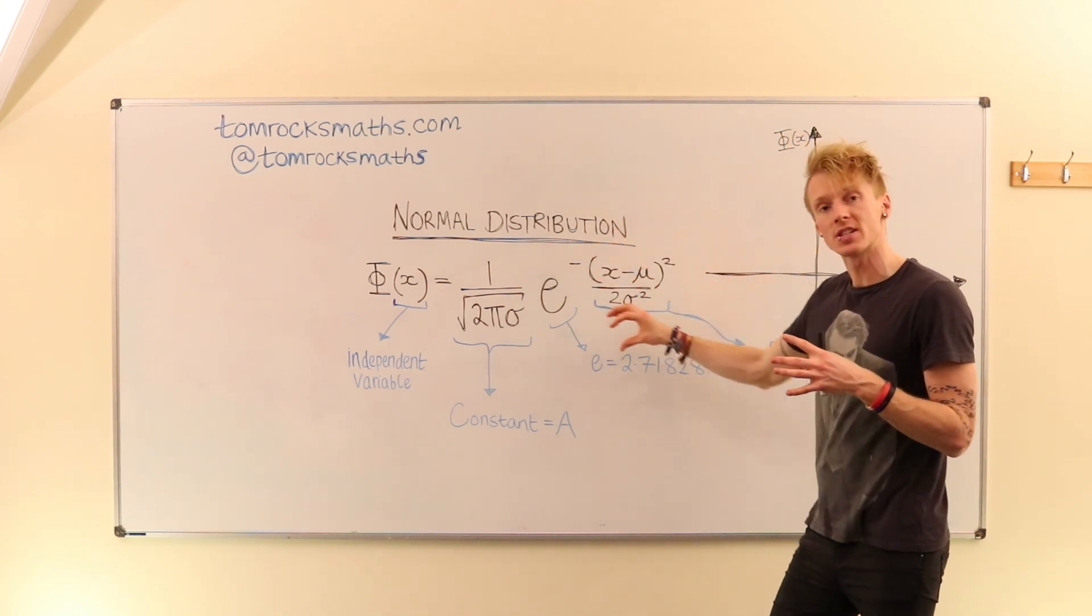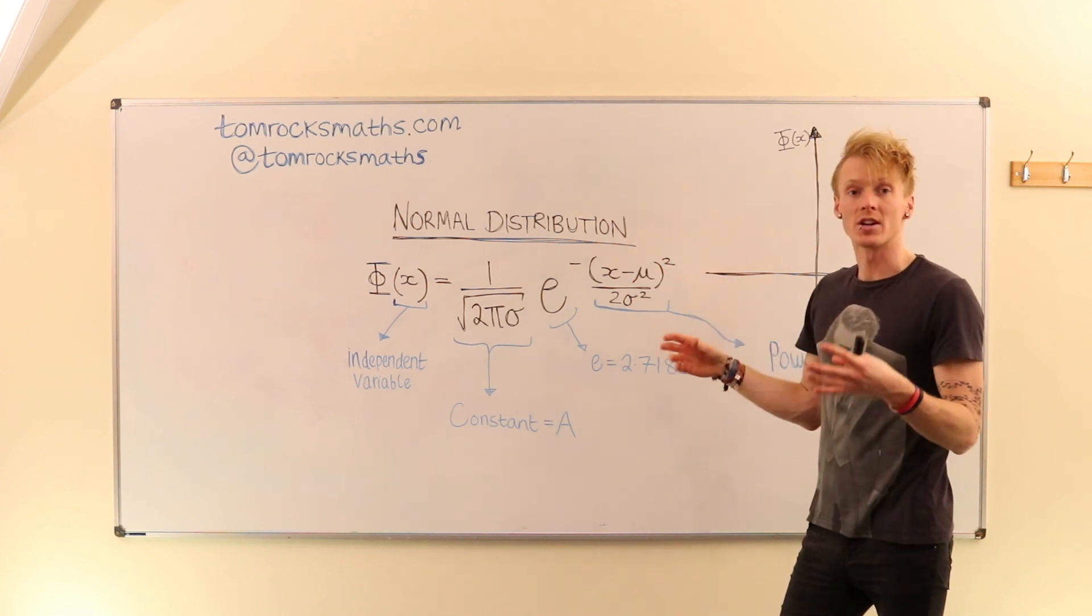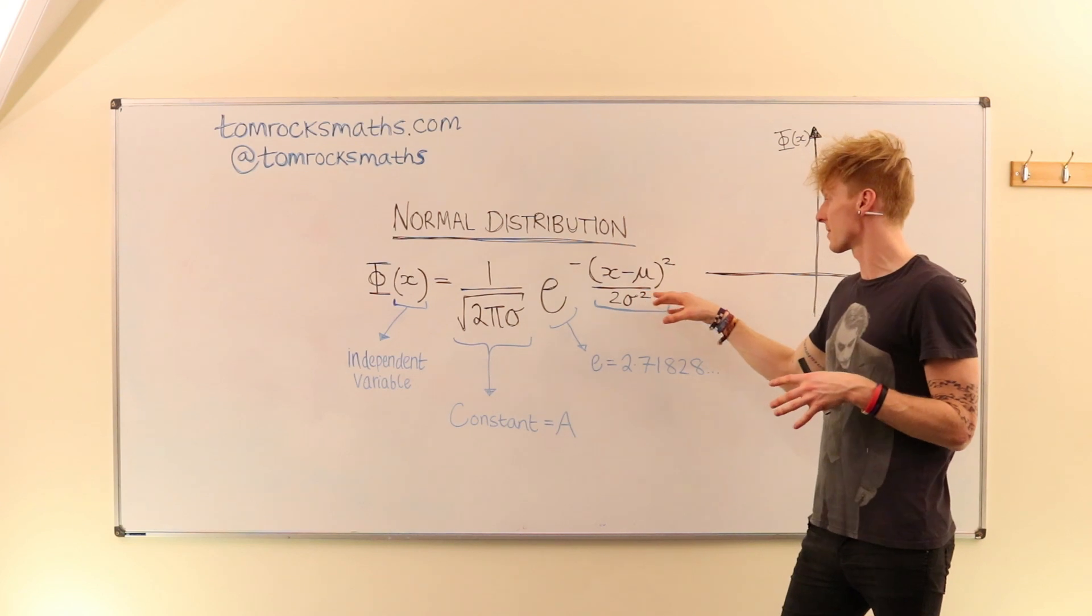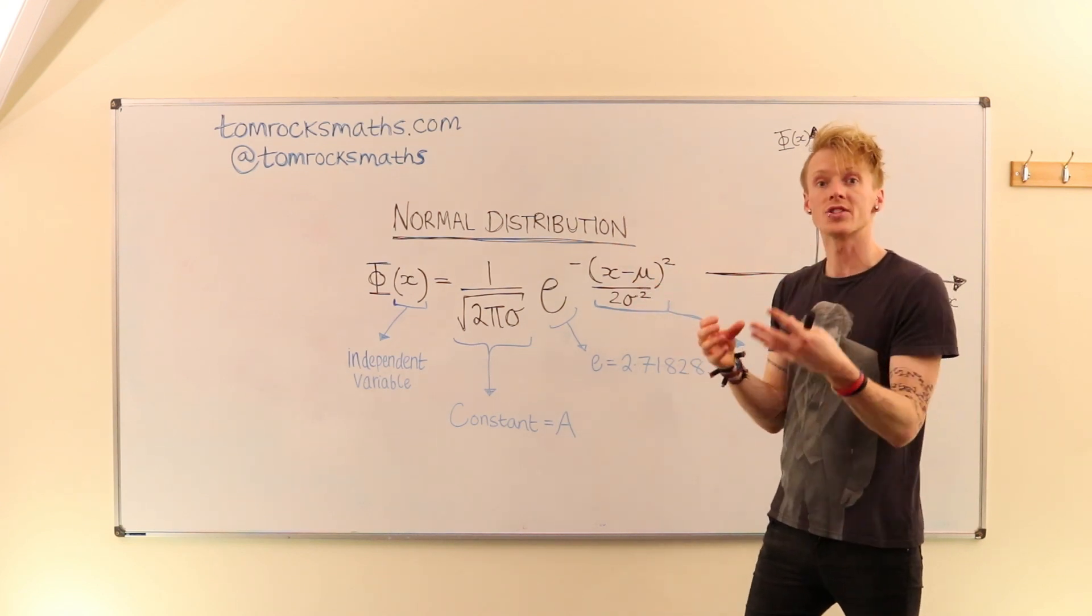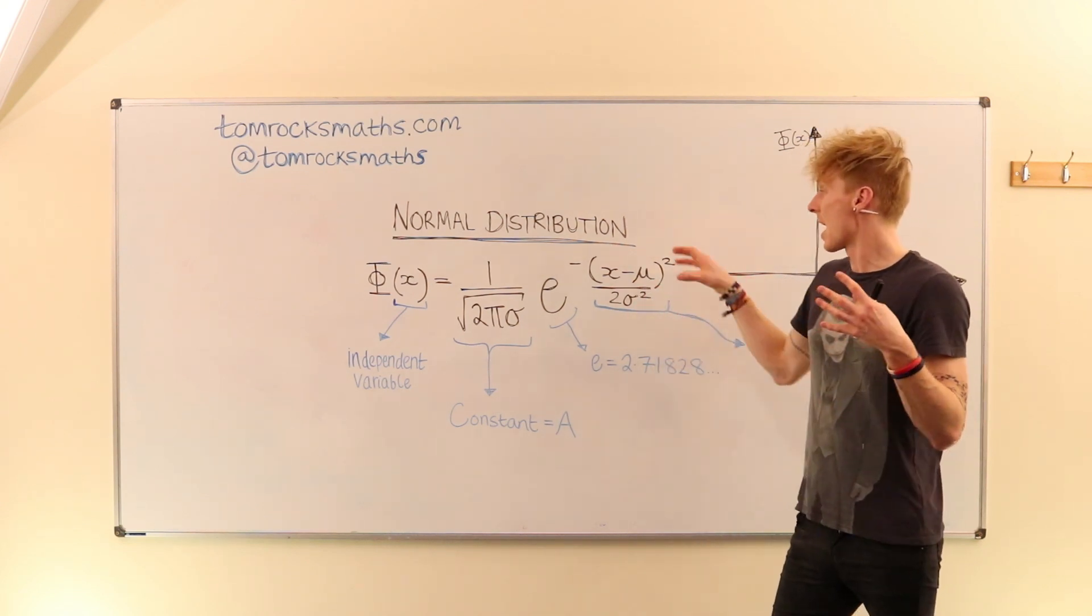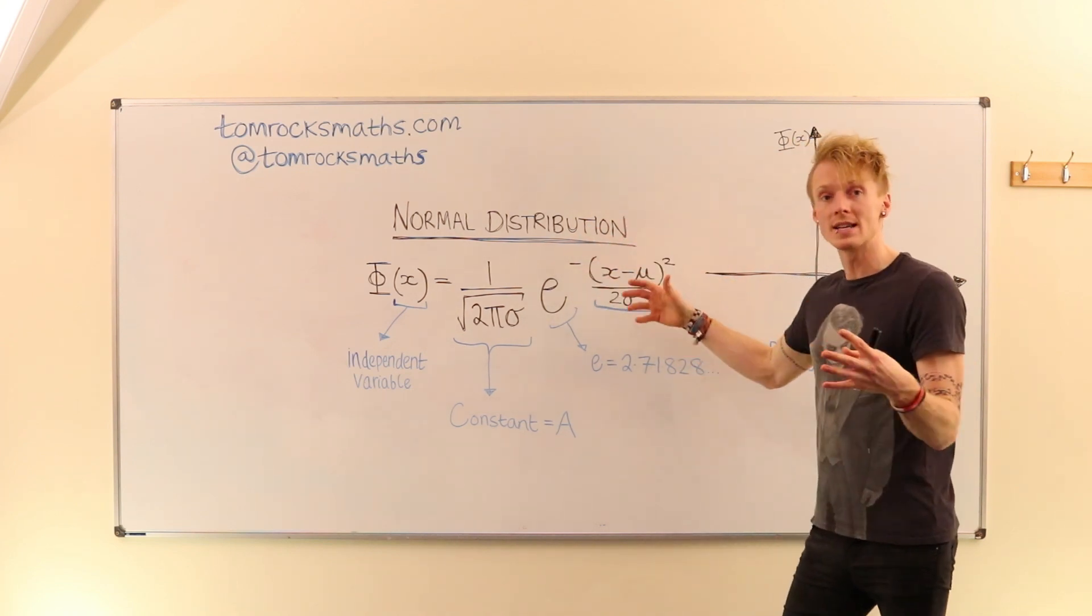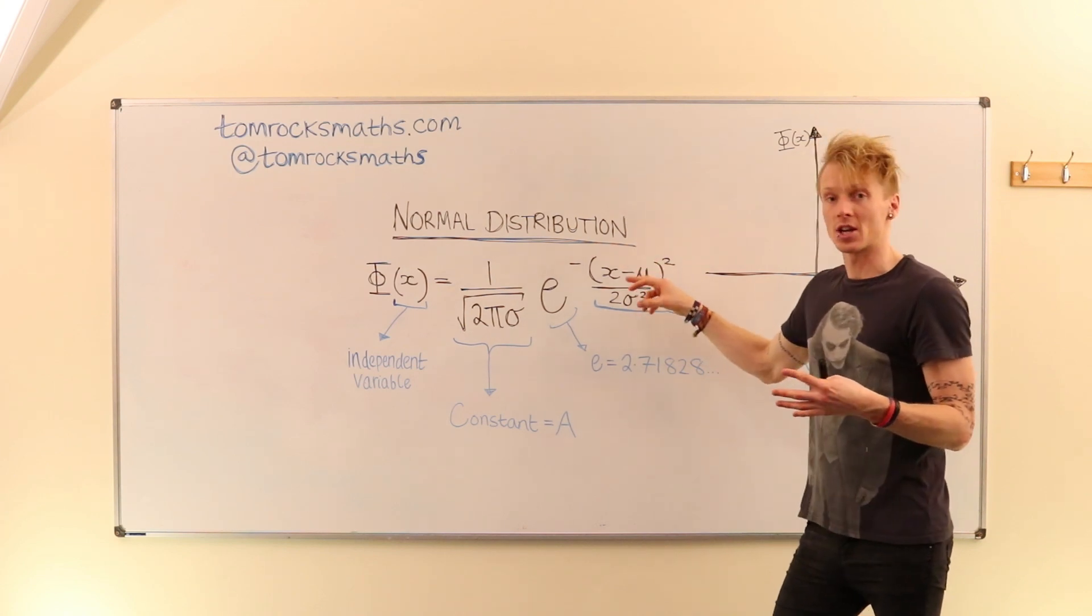Again, looking at most of the terms in here, we have various constants. We have mu, which is a constant. We have 2 sigma squared. They are all constant terms. They are just numbers. And so the important bit in this power that e is being raised to is the x term.